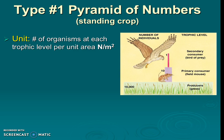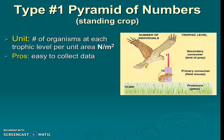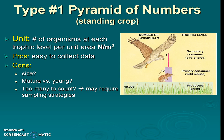The first type is the pyramid of numbers — it refers to standing crop. The unit is the number of organisms in a particular area, such as number per meters squared. A pro is that it's easy to collect data by counting organisms. Cons include that organism size can make data hard to collect, such as counting grass, and it doesn't account for whether organisms are young or old, or how large they are.